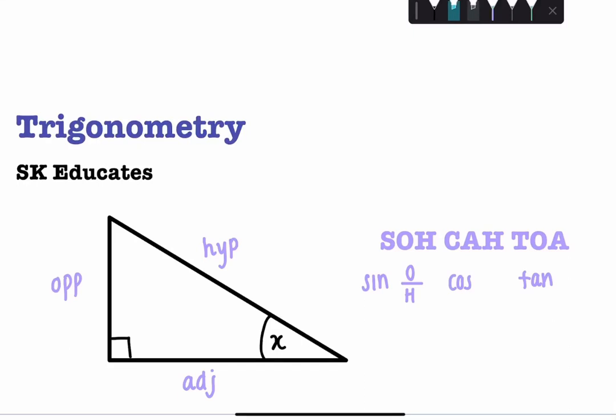Then you have an A and a H following the C which represents cos. So cos is defined as adjacent over hypotenuse. And finally T is followed by an O and an A. So tangent is defined by O divided by A.